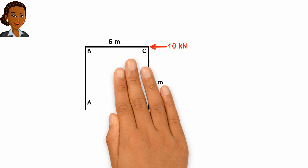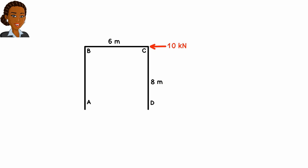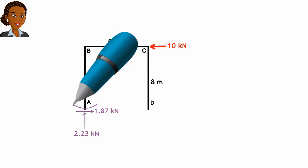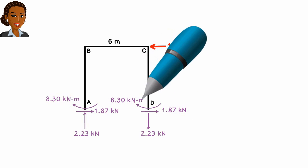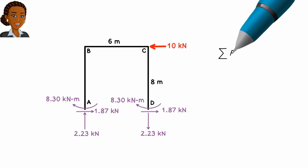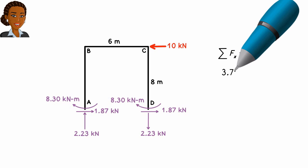We know that if these were the actual reaction forces for the frame, then the equilibrium conditions would have held true. Let's check and see how good our initial guess was. We know that the sum of the forces in the x direction must be zero. That is, the sum of the support reactions in the x direction must be equal to 10 kN.